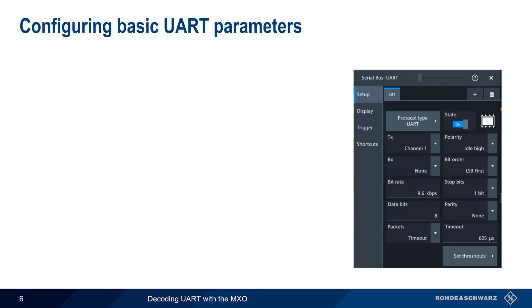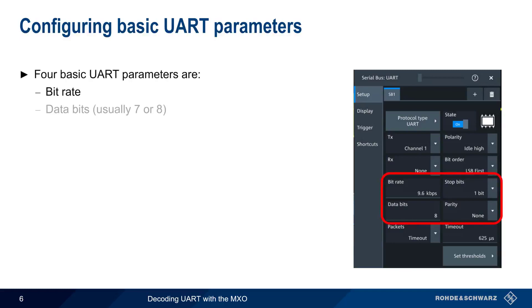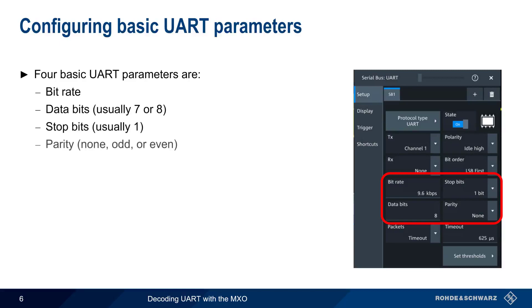Next, we'll look at how UART parameters are configured. The four most basic UART parameters are the bit rate, the number of data bits (usually 7 or 8), the number of stop bits (usually 1), and whether even, odd, or no parity is being used.